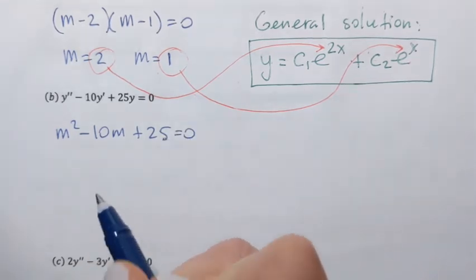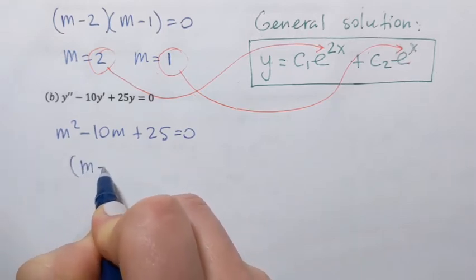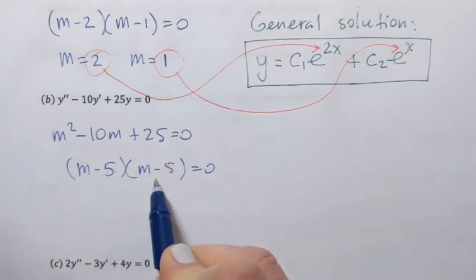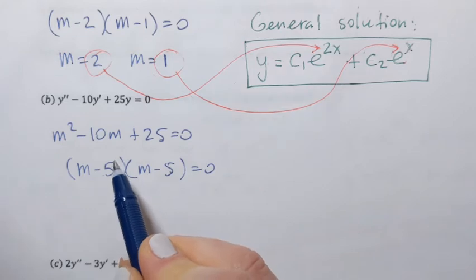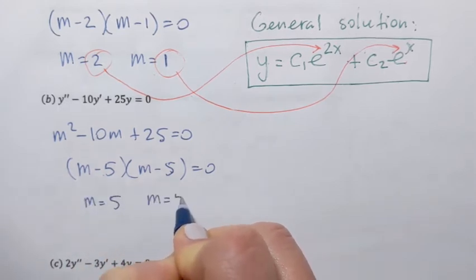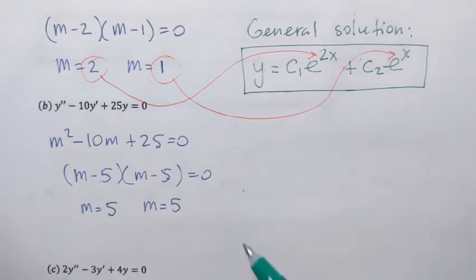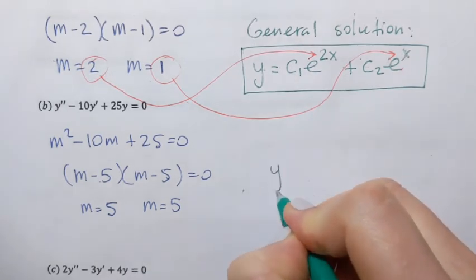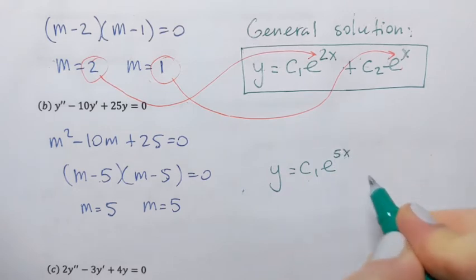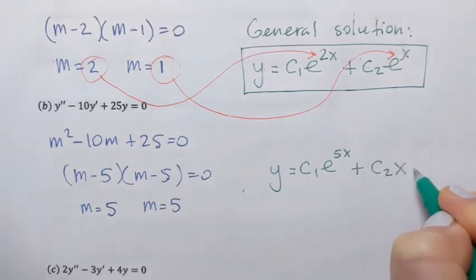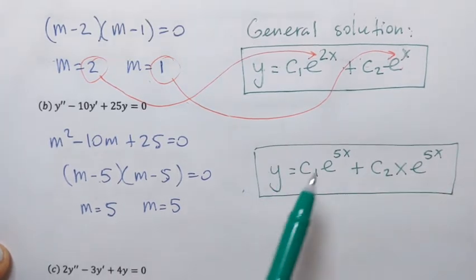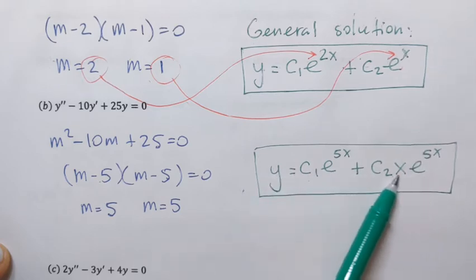That quadratic equation can also be solved by factoring. It's m minus 5 times m minus 5 equals 0 — negative 5 times negative 5 is 25, and negative 5 plus negative 5 is negative 10. You might recognize this as a perfect square of a difference formula. From here we have m equals 5 and m equals 5 — a repeated real root. The general solution is y equals c1 e to the power of 5x plus c2 x e to the power of 5x. That real root is placed in the exponent, and everything else follows that same form.